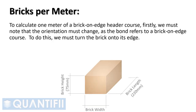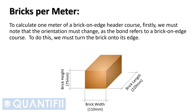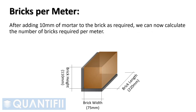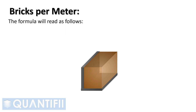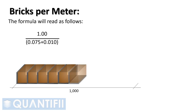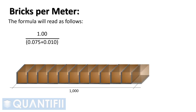To calculate one meter of a brick on edge header course, we must note that the orientation must change, as the bond refers to a brick on edge course. To do this, we turn the brick onto its edge — the brick at its base is now 75 mm wide and the height 110 mm. After adding 10 mm of mortar, the formula reads: 1 ÷ (0.075 + 0.01) = 11.76 bricks per meter, which we can round up to 12 bricks per meter.